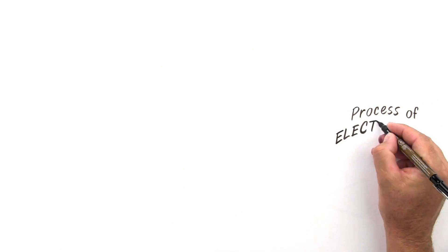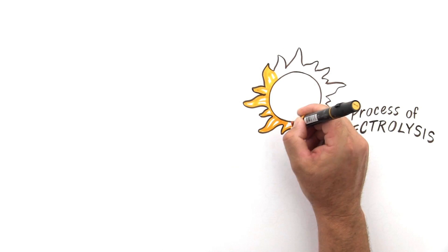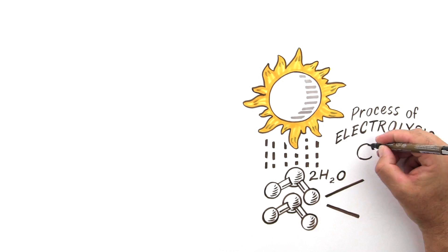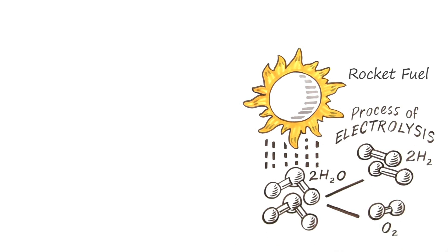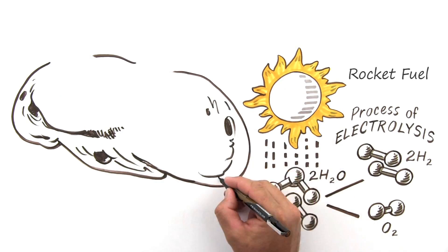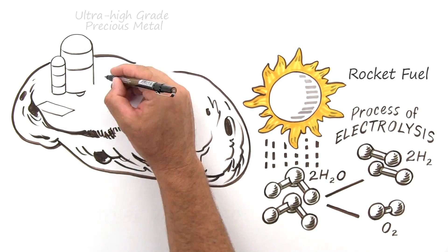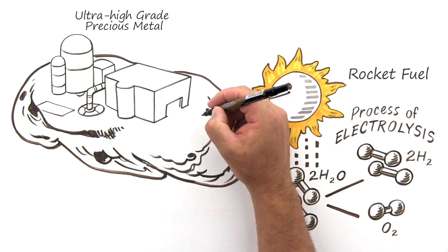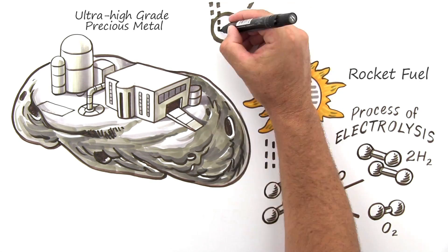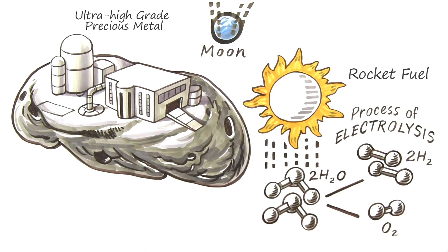Fortunately, rockets run most efficiently on hydrogen and oxygen, which is just electrolyzed water, and exists in near infinite quantities on asteroids. These future oil fields of space are also ultra-high-grade precious metal mines that lie unperturbed as the low-hanging fruit of our solar system, energetically closer than the moon, just waiting to be harvested.